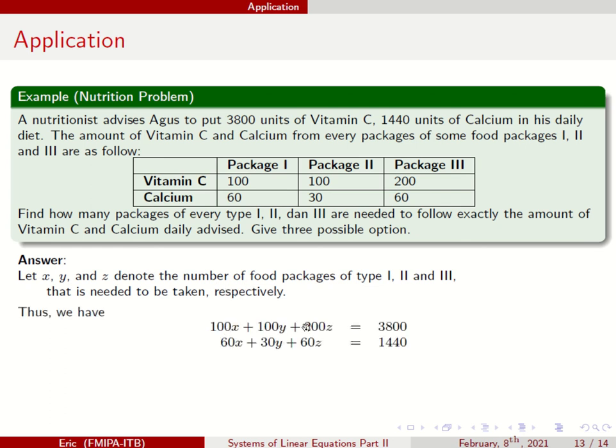So the first equation: 100X plus 100Y plus 200Z equals 3,800. What does the first equation represent? This represents the units, the total units of vitamin C. What about the second one? 60X plus 30Y plus 60Z equals 1,440. This is the total units of calcium. The total unit of calcium should be this and the total unit of vitamin C should be this.